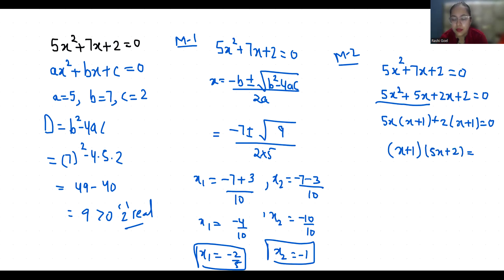Now first x + 1 = 0, x = -1, and 5x + 2 = 0, x = -2/5.